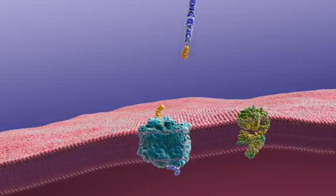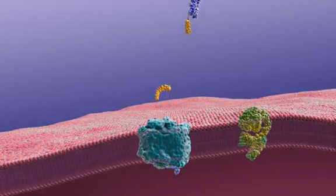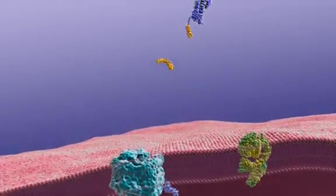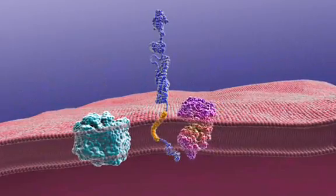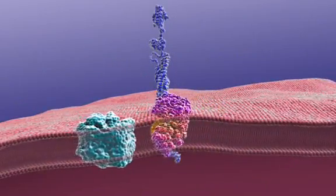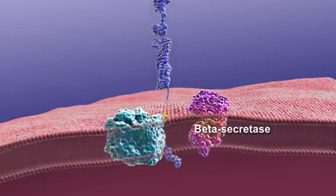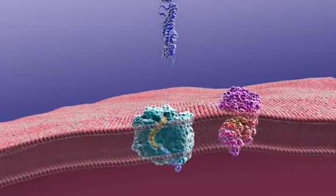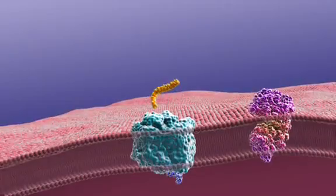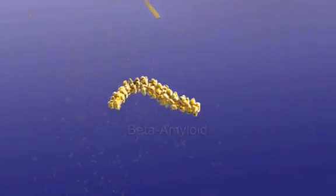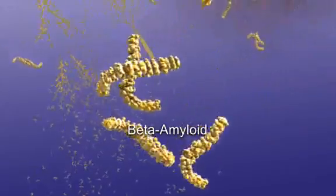These released fragments are thought to benefit neurons. In Alzheimer's disease, the first cut is made most often by another enzyme, beta-secretase, that combined with the cut made by gamma-secretase results in the release of short fragments of APP called beta amyloid.